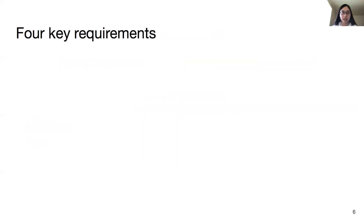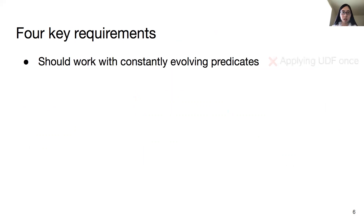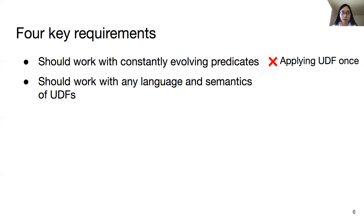In order to accelerate opaque filter query execution, a desired method needs to meet four key requirements. First, it should work with constantly evolving predicates, so the UDF cannot be applied just once to record the answer. Second, it should work with any language and semantics of UDFs. But previous works, Freud and Manmo, are only designed for Transact-SQL UDFs and MapReduce programs.